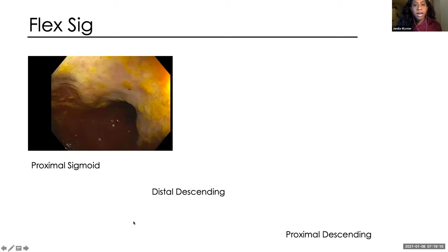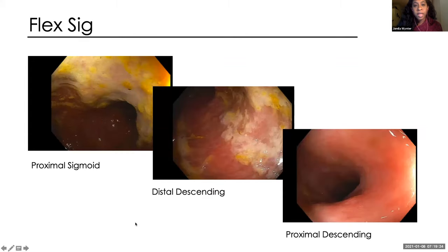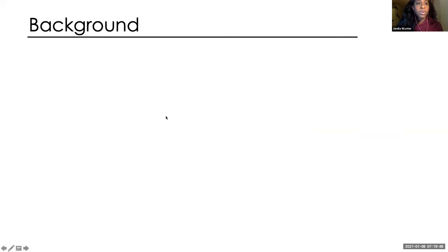Continuing our flex sig, the rest of the sigmoid has worsening ulceration now involving more of the circumference of the colon, and then that involves the descending colon. We stopped essentially at the distal-most extent of the disease. We didn't actually take biopsies because we have a high clinical suspicion of what we ultimately call this, which is ischemic colitis or non-occlusive colonic ischemia. I think it's always a good thing to review — so what is ischemic colitis?